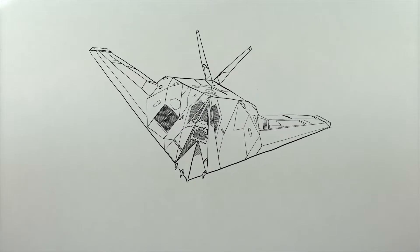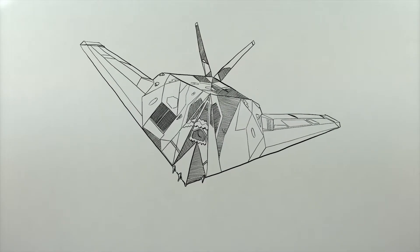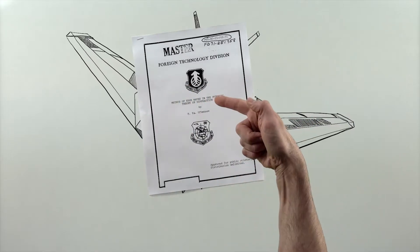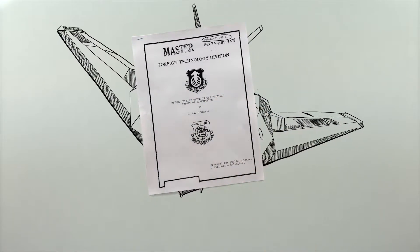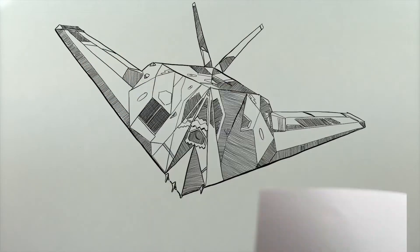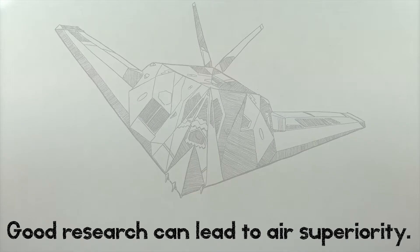That said, back in the 1960s during the Cold War, a Russian mathematician published about the diffraction of electromagnetic waves, which the Soviet government and everyone else ignored for a decade until American engineers found it and used it to build the first stealth aircraft. Awkward for the Soviets.